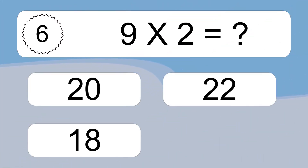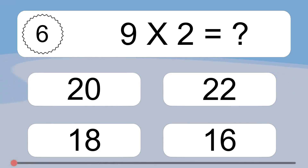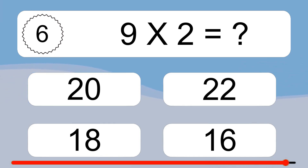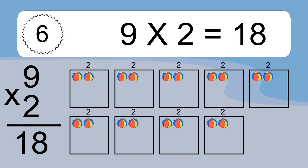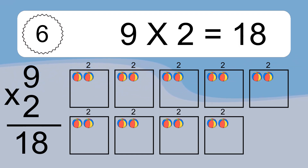9 times 2 equals what? 9 times 2 equals 18. We have 9 boxes, and each box has 2 colorful balls inside. If you count all the balls in all the boxes together, you will have 9 times 2 balls. This equals 18 balls.